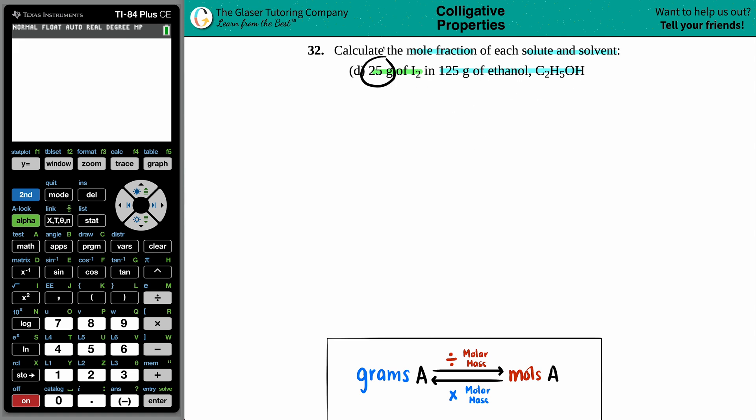We have a smaller amount here, 25 grams versus 125. But since they said that I2 was in the ethanol, we know that the I2 is the solute and the ethanol is the solvent. When they come together, when you place the I2 in the ethanol, it becomes a solution.